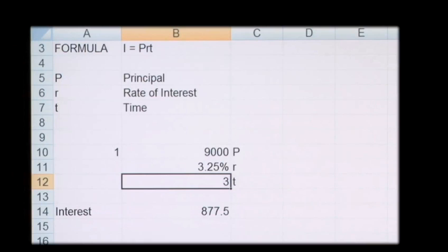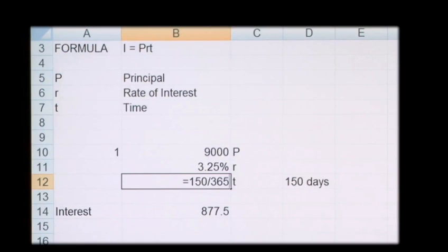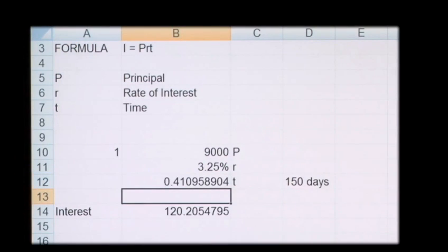The method for doing this is: rather than T equals 3, for example, if we only generated interest for 150 days in the year, the time period would become 150 divided by 365 days, because it's only a portion of the year. This would mean we only generate interest of £120.